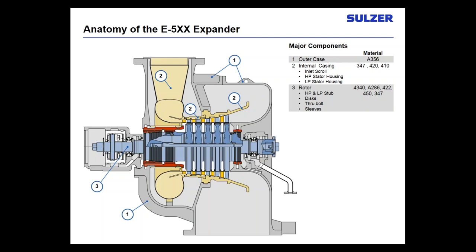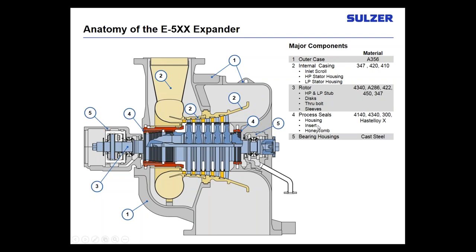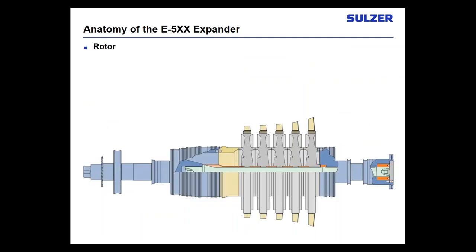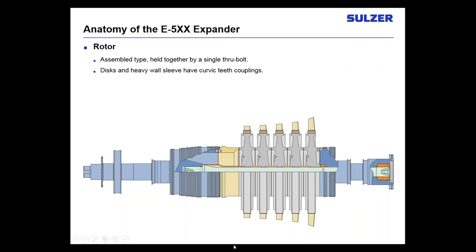The internal casing is formed of three components: the inlet scroll, the HP stator housing, and the LP stator housing. Then there's the rotor — we'll go more in-depth on the stationary and rotating components. The process seals: there are two main process seals, the high pressure and the low pressure, and both use honeycomb seals. The bearing housing is on the end, with thrust on the HP side — this is true for all machines and does not vary.